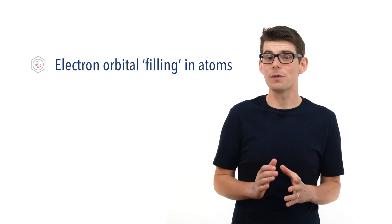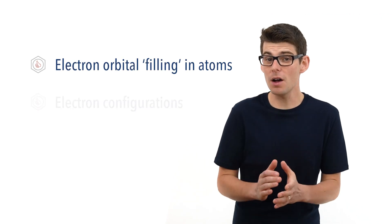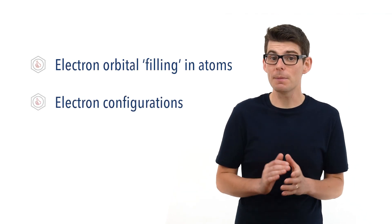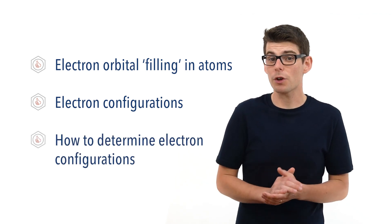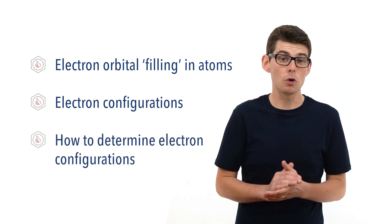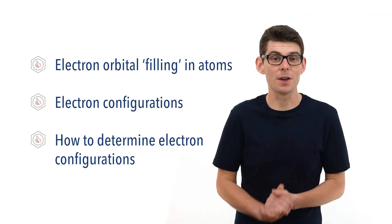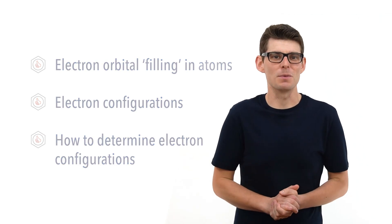Hello, Matt here from chemistrystudent.com. In this video we're going to look at electron configurations. We're going to talk about the order in which electrons fill up orbitals in an atom, what electron configurations are, and how to determine the electron configuration of an element. Atomic structure and atomic orbitals have been covered in separate videos — check the links in the description below.